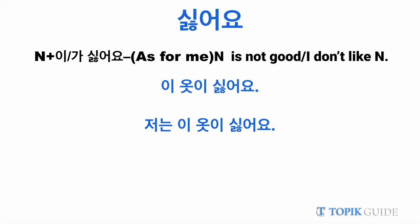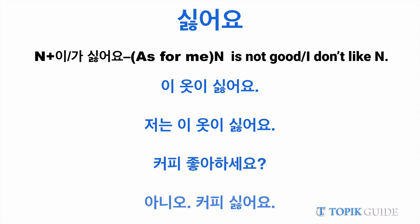It means 'as for me, as far as I am concerned, I don't like this dress.' So let's say someone asks you 'koppi choaaseyo' — do you like coffee? You can say 'anio, koppi shiroyo.' Here you have dropped the ga particle; in spoken Korean it's okay to drop particles sometimes, but technically grammatically it should be 'anio, chanen koppi ga shiroyo.'